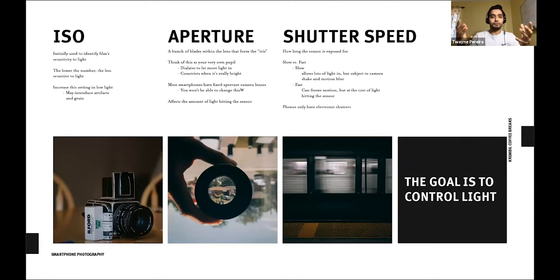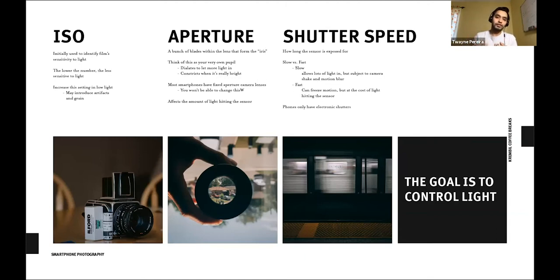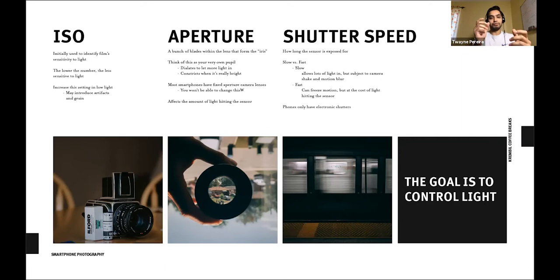The second element of the exposure triangle is aperture. This may not apply much to smartphones since most have a fixed aperture. Think of the aperture as your pupil — you can change it to let more light in or constrict it to let less light in. On a camera with a changeable lens, you can literally see the blades constrict and form a pupil shape before the photo is taken. Aperture also affects the amount of light hitting your sensor.